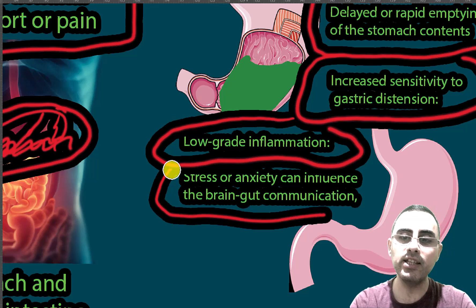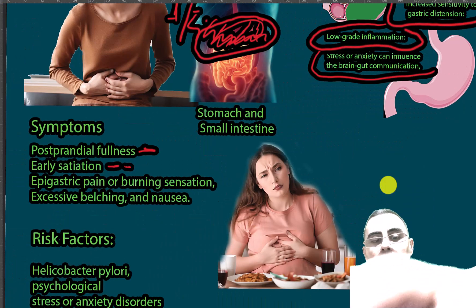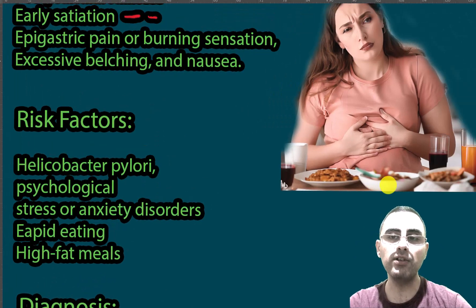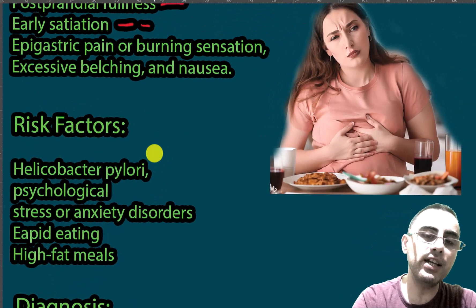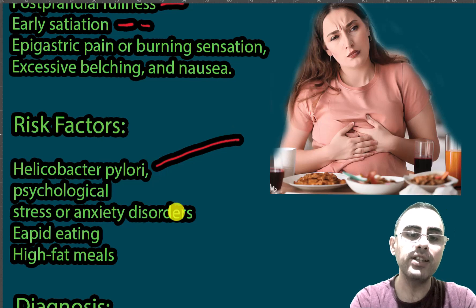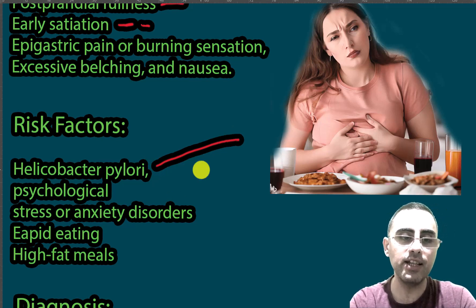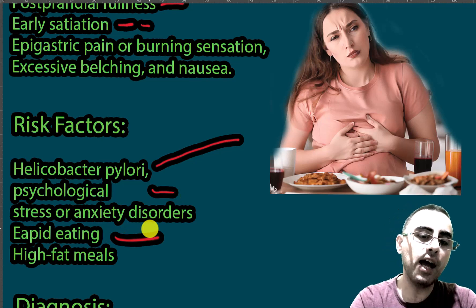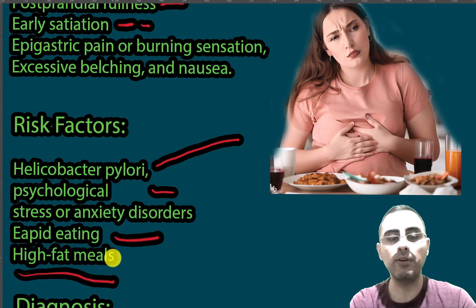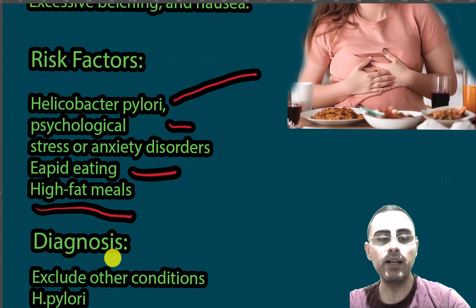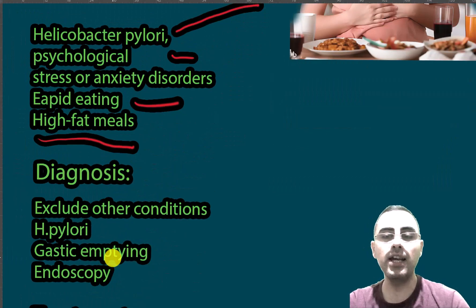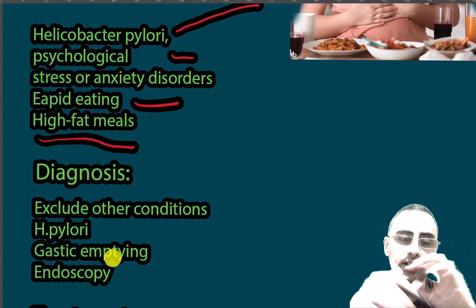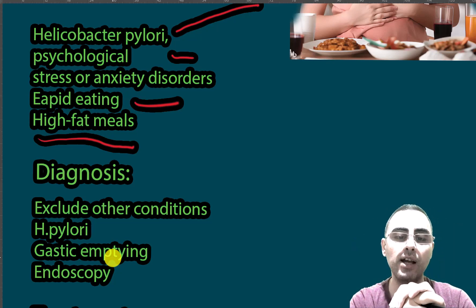Risk factors for functional dyspepsia include Helicobacter pylori infection, psychological stress and anxiety, rapid eating, and high-fat meals. High-fat meals are an important risk factor.